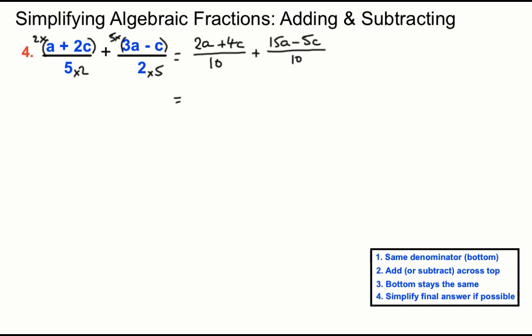Now we can add across the top, we have 2a and 15a making 17a when we join up those two. And then for the next bit we have minus c created by having the 4c here, the plus 4c and the minus 5c. We're taking away one more than we've got there, creating a minus 1c there. And that's keeping the bottom the same. We get 17a minus c over 10.